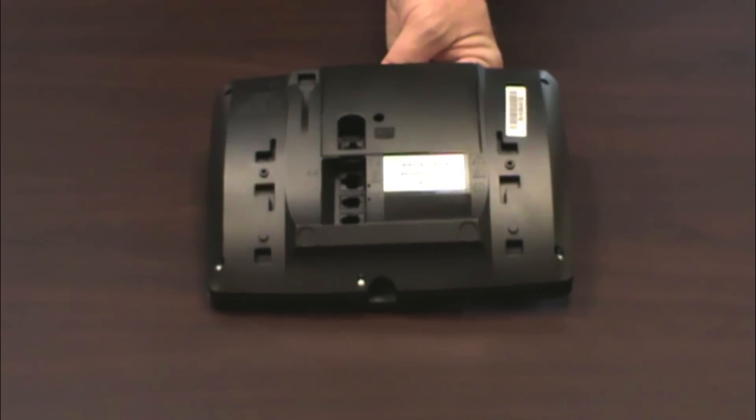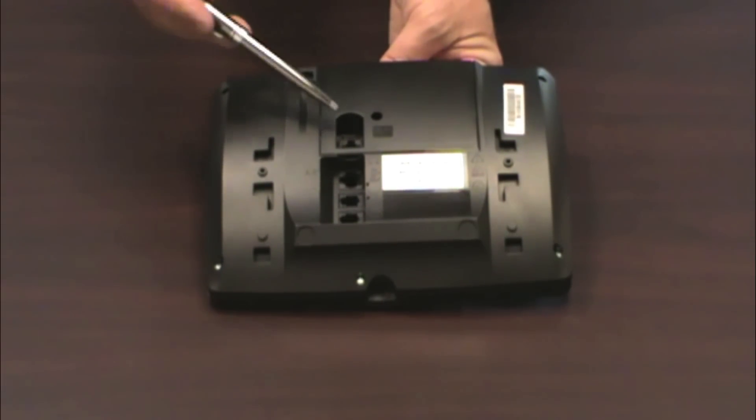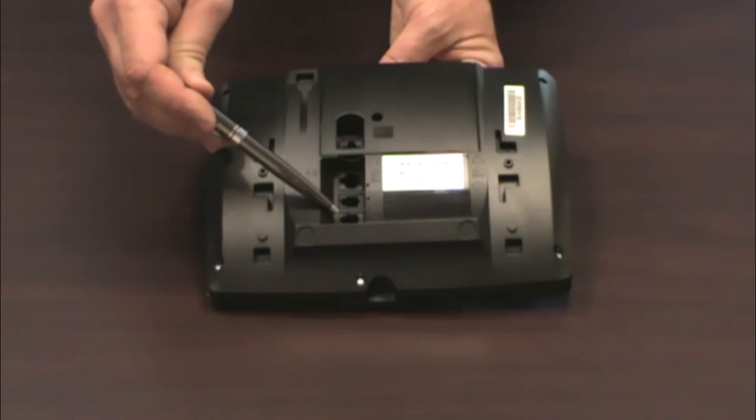This is the back of the phone. There are four ports on the back of the phone. Connect your LAN to this port. If you connect your PC to your phone, connect it here. The handset connects here. And if you buy an optional headset, connect it here.